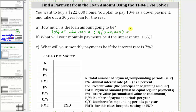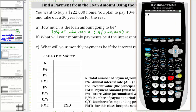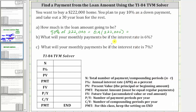Going to the calculator, 0.9 times 222,000 is 199,800. Therefore, the loan amount is $199,800.